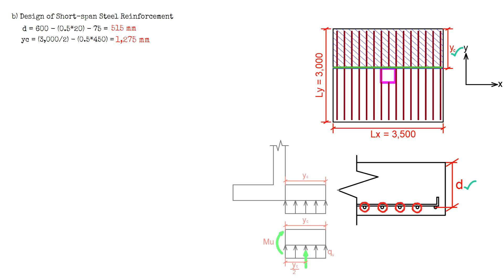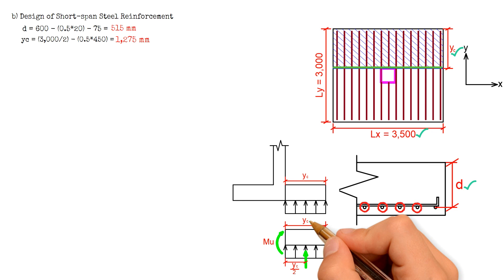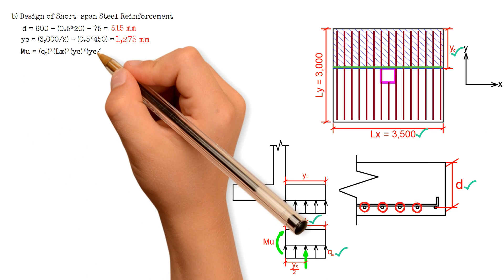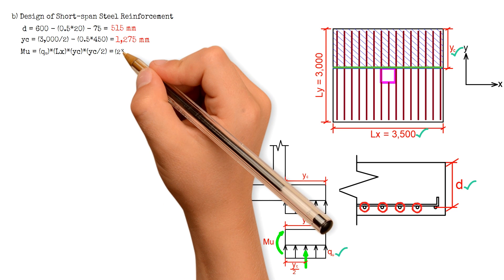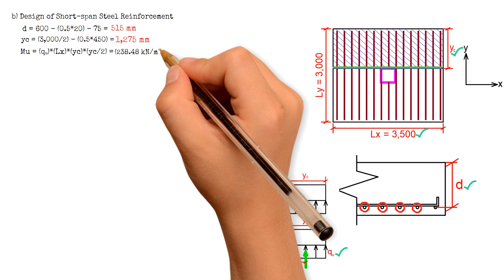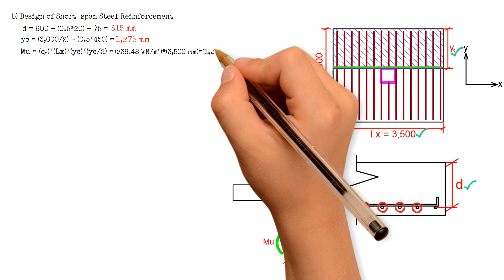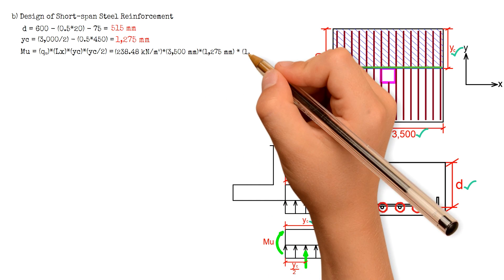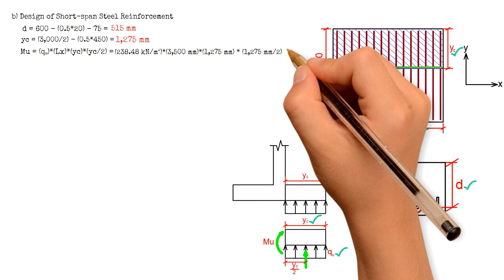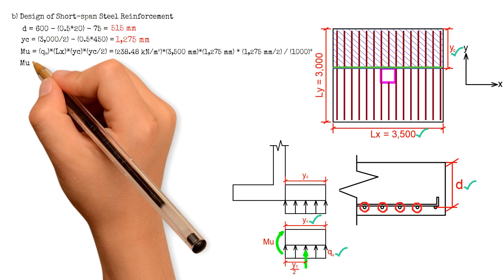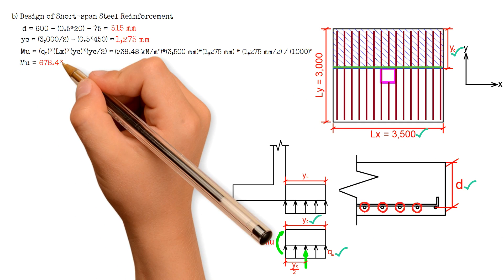Next is to calculate for the moment MU, which equals the net upward pressure QU, times the width LX, times the square of Y sub C, divided by 2. We have 238.48 kN per square meter, multiplied by the width 3500 mm, multiplied by the square of 1275 mm, then divided by 2. The result is 678.43 kNm.